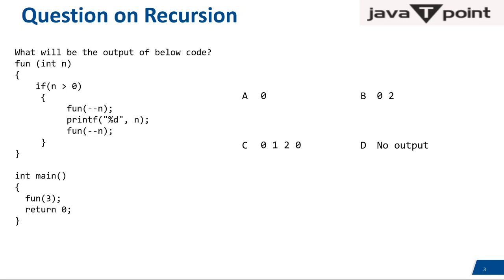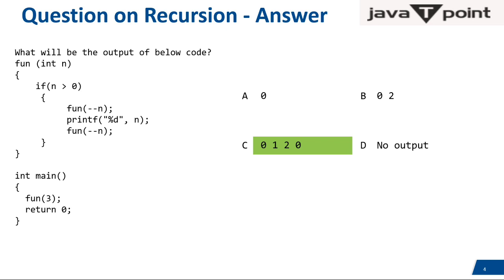Here is the question with some options — you need to identify the answer. The question is: what will be the output of the below code? There is a function with value n being passed, and in main we are calling the function with value 3. I'm giving you 10 seconds to read this. The answer is C — and it's really strange. You must be wondering how 0 1 2 0 is the answer.